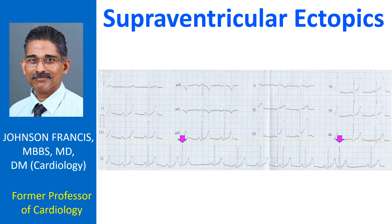The lead to rhythm strip at the bottom of the images shows two premature complexes, the 4th and 11th. These premature complexes are narrow and resemble the QRS complexes of sinus rhythm, hence they are supraventricular ectopic beats. Ventricular ectopic beats are bizarre and wide, totally different from the QRS complexes in sinus rhythm.